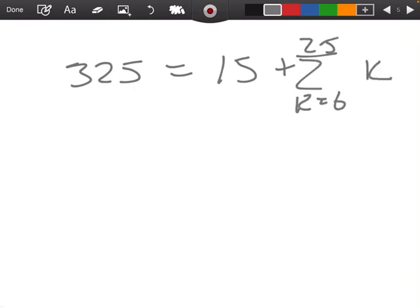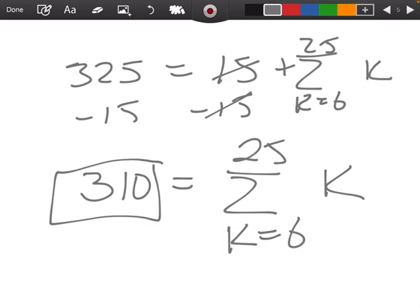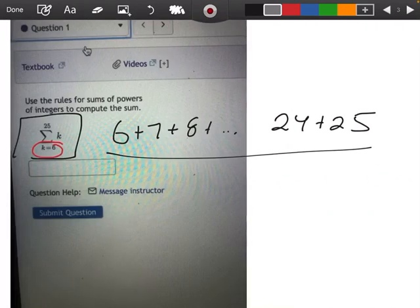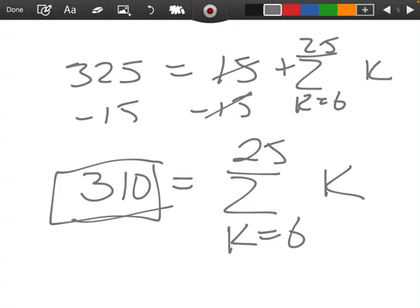Now I'm just going to subtract 15 on both sides. So this should give me 310 for the sum starting from 6 to 25 of K. So again, this is one way I can do it. The other way, start adding them up. And in either case, you should still end up with 310. If you've got any questions, let me know.